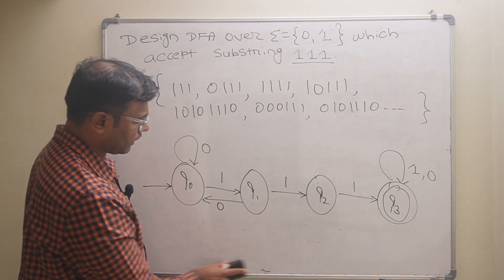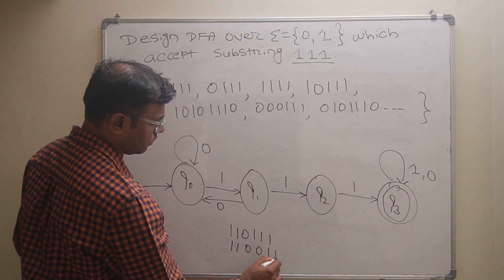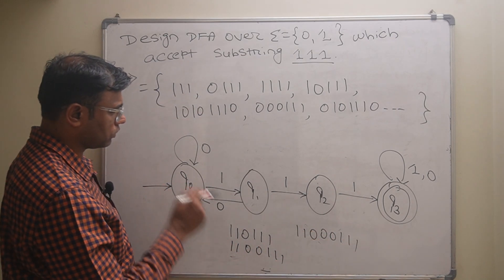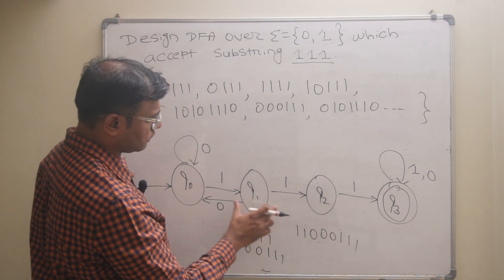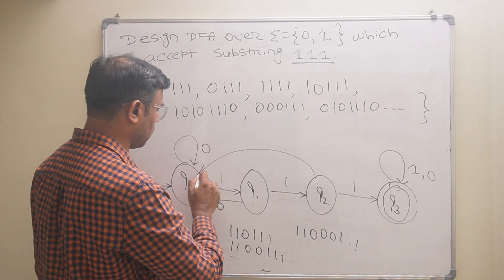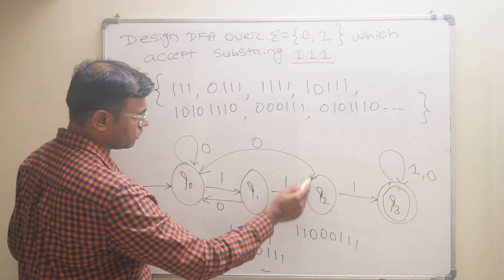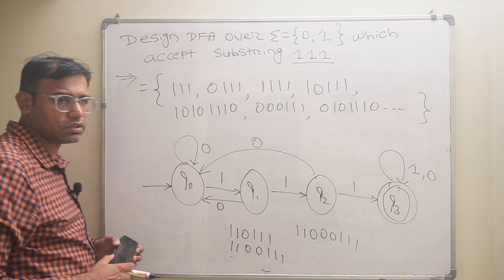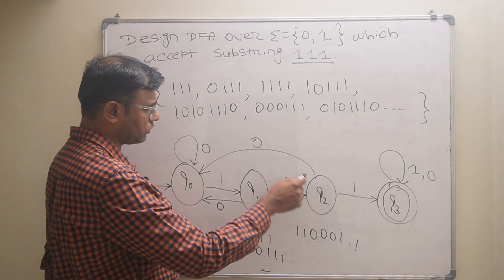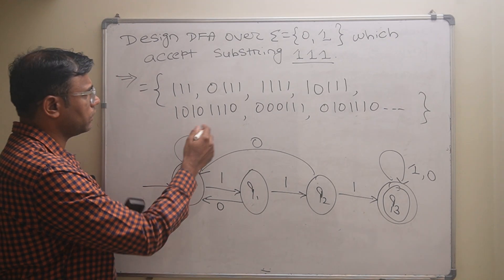Next, for combinations like 110111, 1100111, 11000111 — two ones followed by zeros then 111 — I add an arrow from q2 back to q0 on input zero. This accepts strings like 110111, 11000111, and the string is accepted whenever we reach the final state q3.